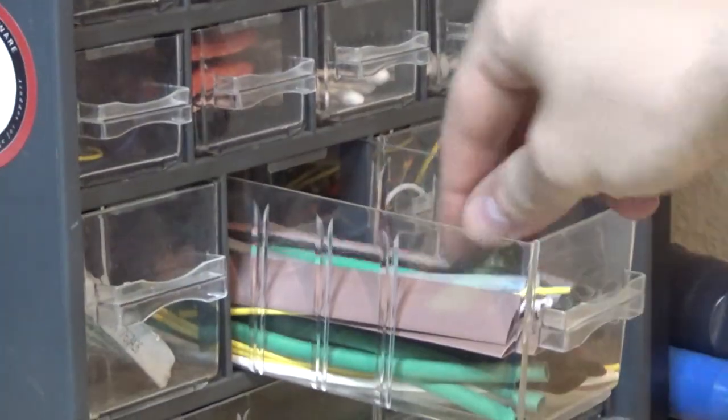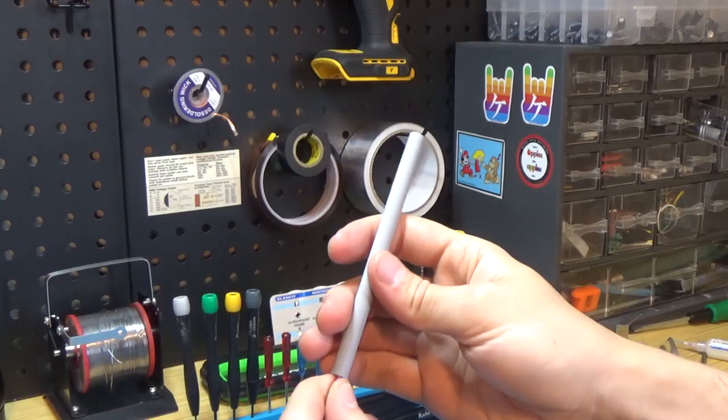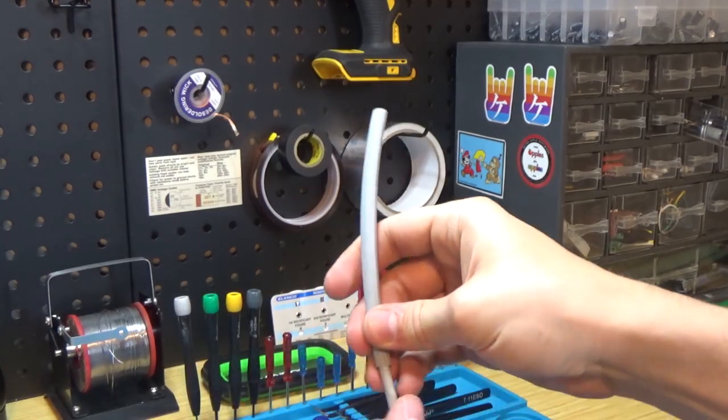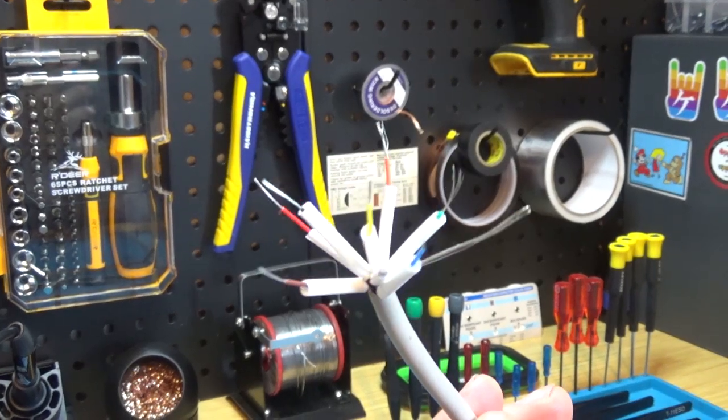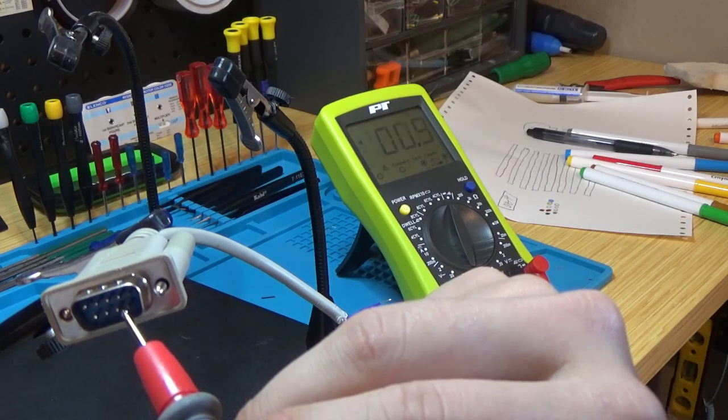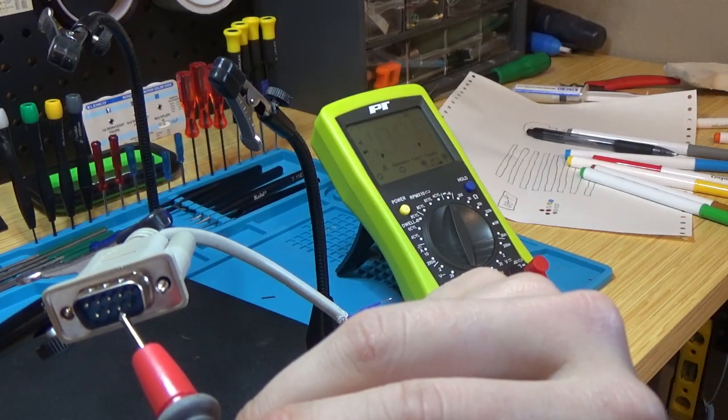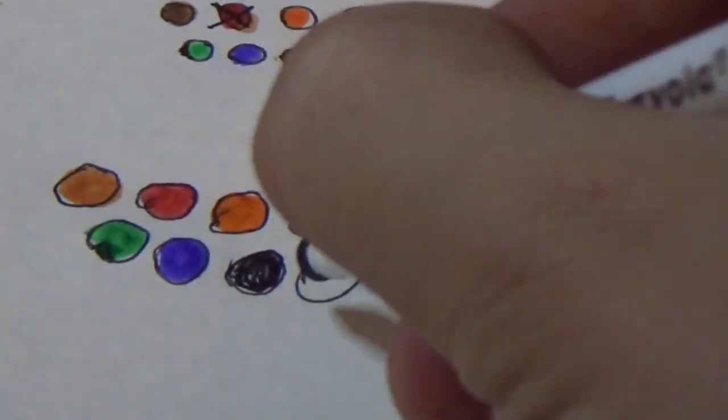Then I slipped some heat shrink tubing over the wires to insulate them after I finished soldering. I then used my multimeter to probe the pins to determine the color code and made a drawing to help keep it straight.